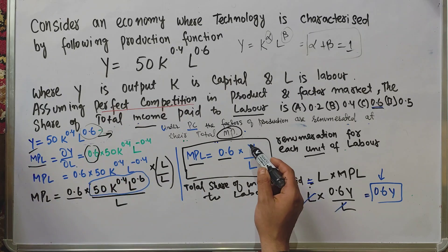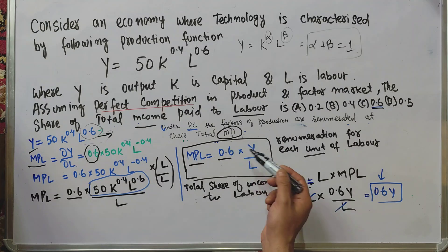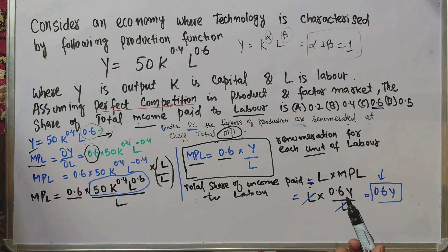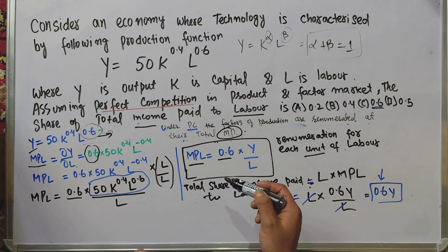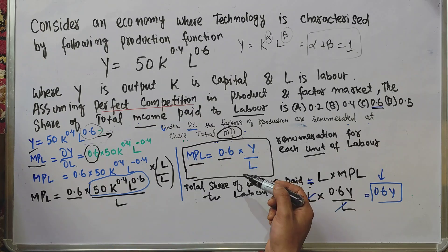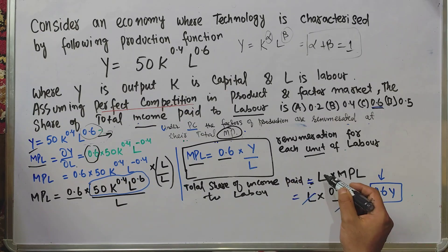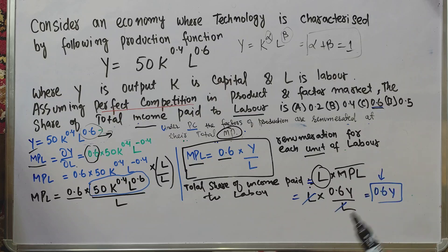This MPL = 0.6Y/L represents the remuneration for each unit of labor. The total share of income paid to labor equals the units of labor employed times the marginal product of labor, which is L × MPL = L × (0.6Y/L).